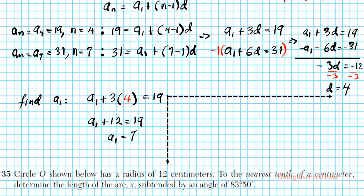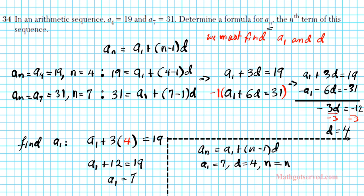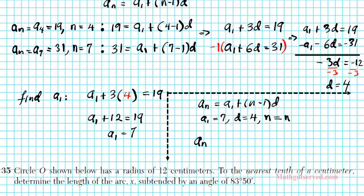Now we have a1 equals 7 and d equals 4. We're ready to generate the equation of the formula for our nth term. It's an equals a1 plus n minus 1 times d. We're going to use a1 to be 7, d is going to be 4, and n is simply going to be n because we're looking for a general formula that always works. Our formula is an equals 7 plus n minus 1 times 4. If you follow the scoring guidelines, this is how it was expressed.